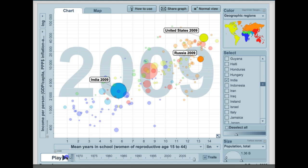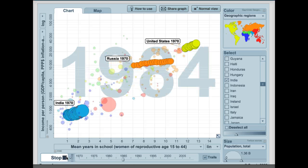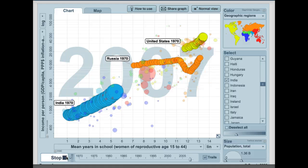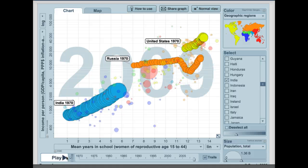If we play that from the beginning, you can see their pattern. As you can see, the circles represent each country, and the circles get bigger and smaller depending on their population.